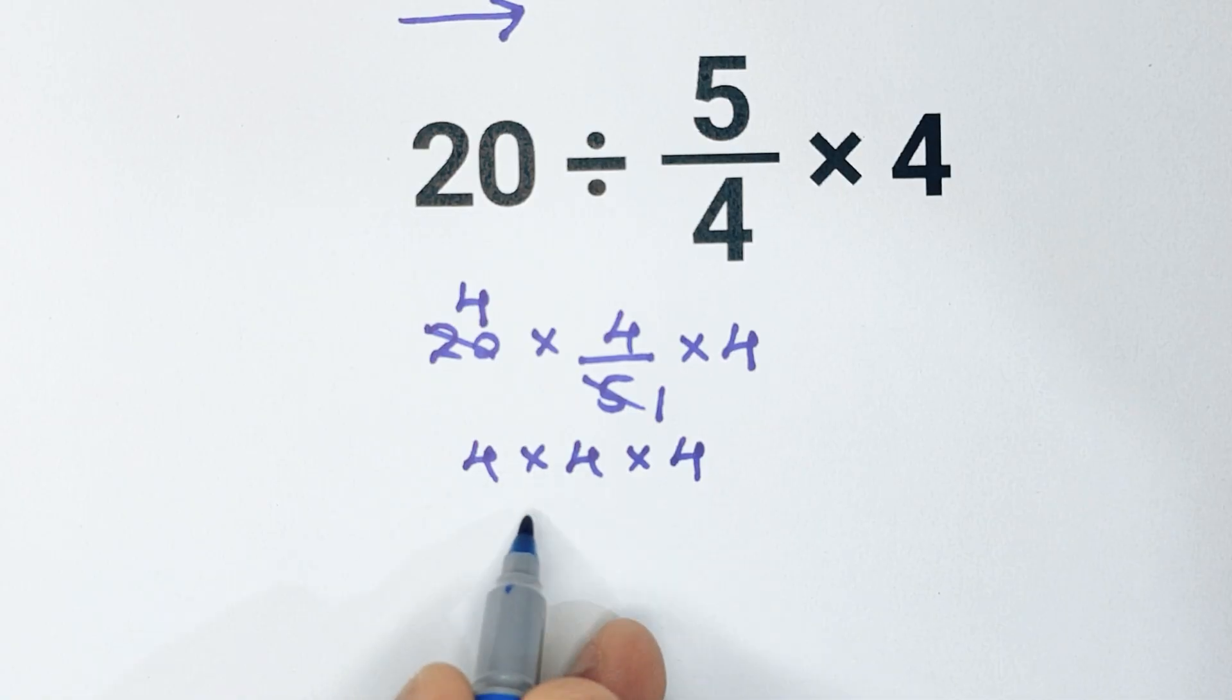4 times 4 is 16, and 16 times 4 equals 64. So the correct answer to this problem is 64.